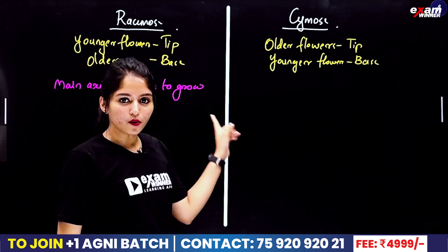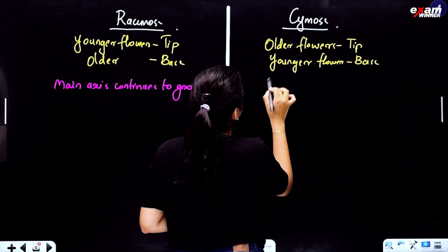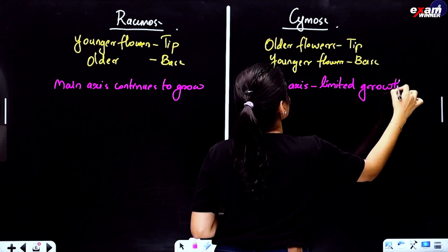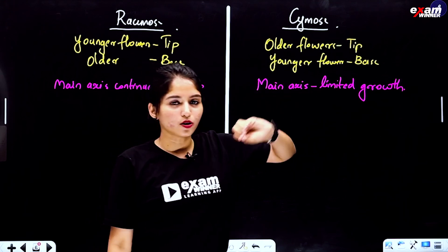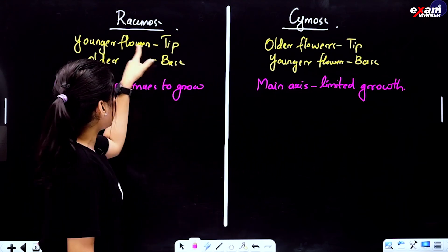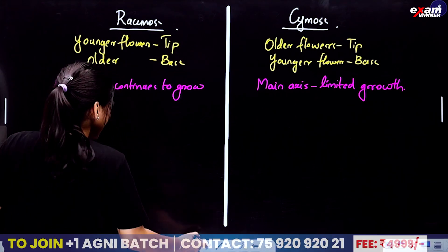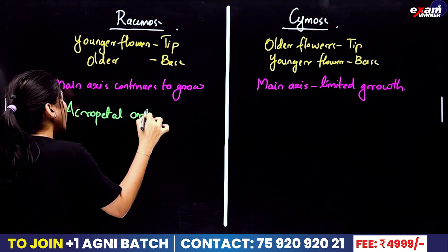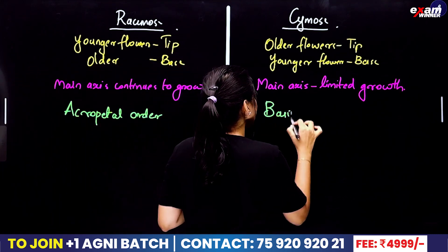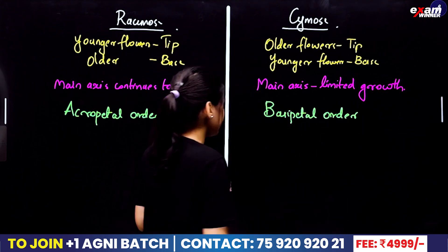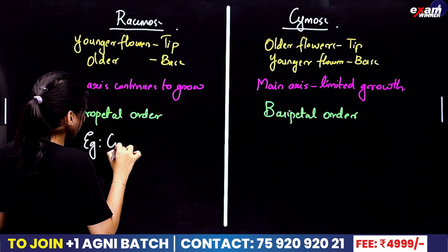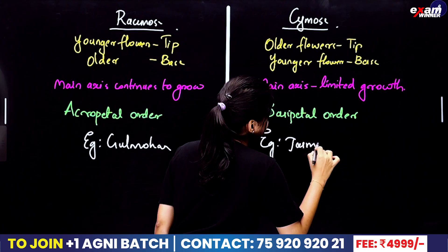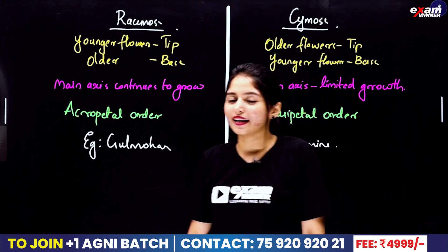In racemose inflorescence, the main axis has unlimited growth, and young flowers are at the tip. In cymose inflorescence, the main axis has limited growth. These are the key differences between the two types.